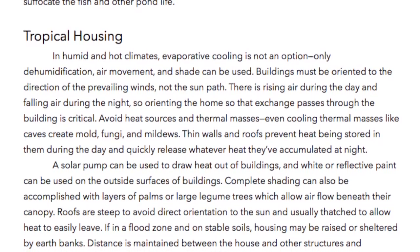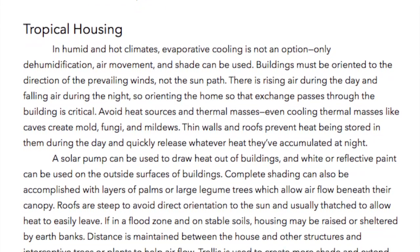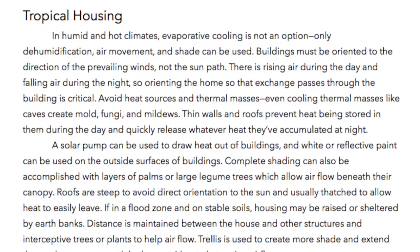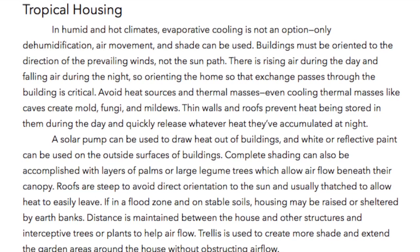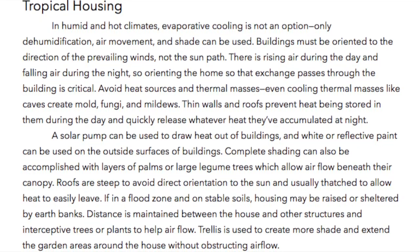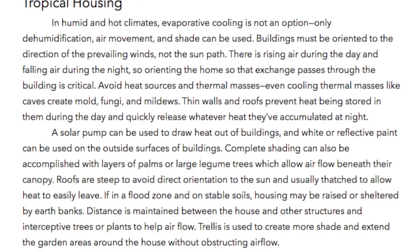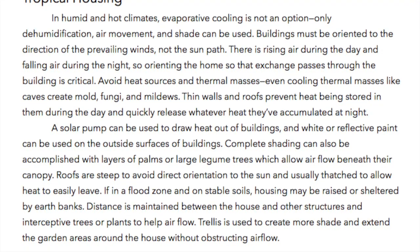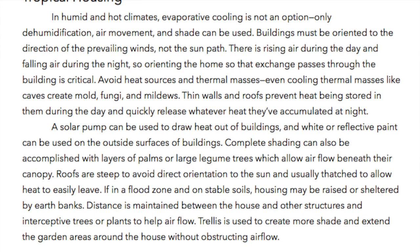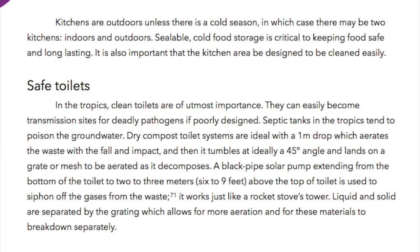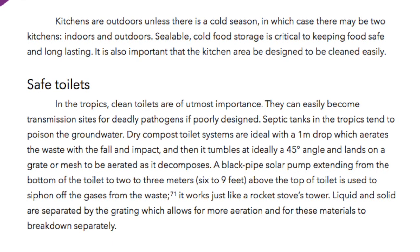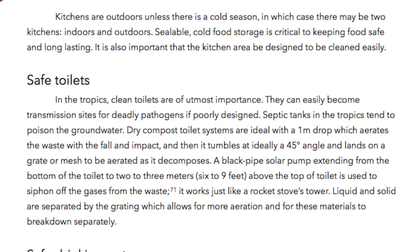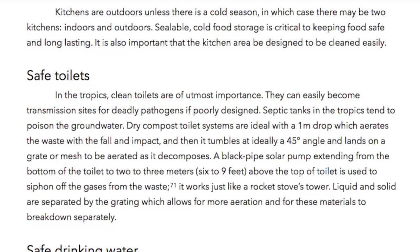Complete shading can be accomplished with layers of palms or large legume trees, which allow airflow beneath their canopy. Roofs are steep to avoid direct orientation to the sun and usually thatched to allow heat to easily leave. If in a flood zone and on stable soils, housing may be raised or sheltered by earth banks. Distance is maintained between the house and other structures and interceptive trees or plants to help airflow. Trellis is used to create more shade and extend the garden areas around the house without obstructing airflow. Kitchens are outdoors unless there is a cold season, in which case there may be two kitchens — indoors and outdoors. Sealable cold food storage is critical to keeping food safe and long-lasting, and the kitchen area must be designed to be cleaned easily.